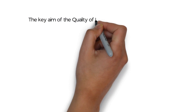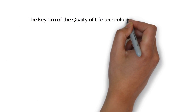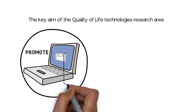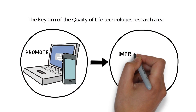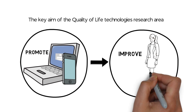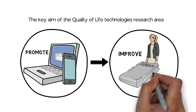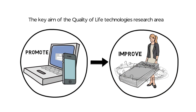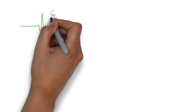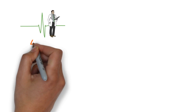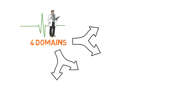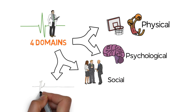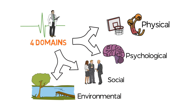The key aim of the Quality of Life Technologies Research Area is to promote information and communication technologies to improve quality of life of individuals through rigorous scientific research, outreach, and education. The World Health Organization defines an individual's quality of life across four domains: physical and psychological health, social relationships, and environmental context.